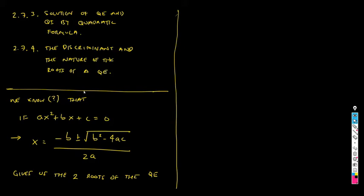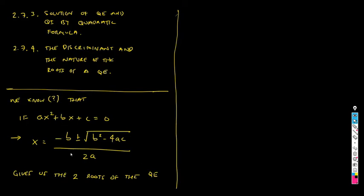Okay, let's start. So let's begin by saying the following. We know — supposedly, that's why I'm writing the question mark — that if we have a quadratic equation in the general form or standard form, then the quadratic formula, which is this thing that we have known since maybe junior high, gives you automatically the two roots of this quadratic equation. And you learned this by rote memorization.